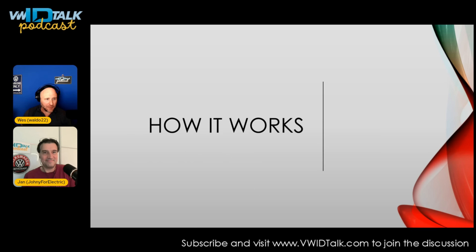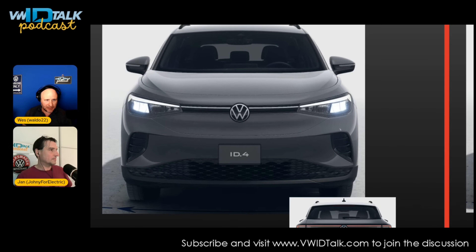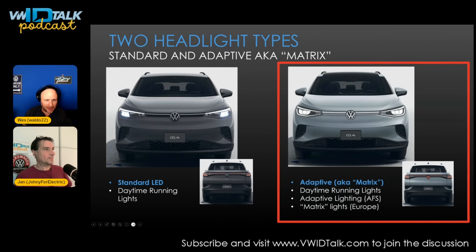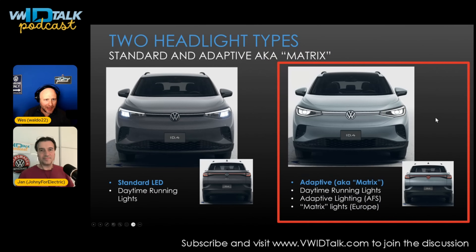Jan figured this out by comparing the coding on a car with matrix headlights enabled to our US-spec ID.4s, which did not have it enabled. There are two different styles of headlights. The picture on the left is an ID.4 with standard LED headlights showing the daytime running lights on the little eyebrows. On the right, you've got an eyeball that can move and follow you around corners. That is the hardware that allows you to have the dynamic high beam technology, which is called Matrix by Volkswagen.